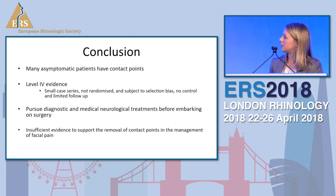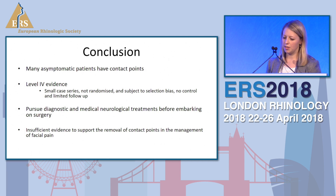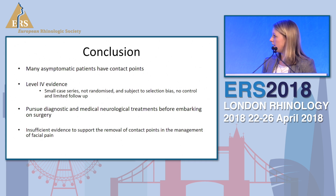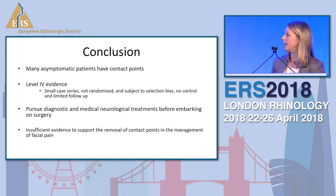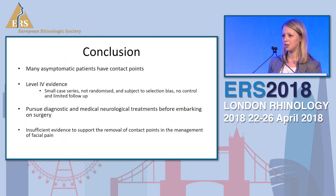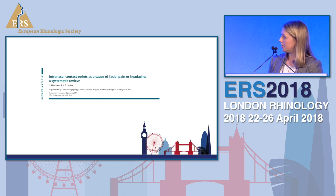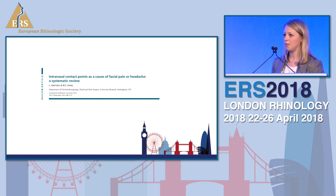In conclusion, many asymptomatic patients have contact points. There is only level four evidence — small case series that are not randomised, subject to selection bias, with no control group and limited follow-up. It's important to pursue diagnostic and medical neurological treatments before embarking on surgery. One study showed that 90% of patients diagnosed with sinus headache actually fulfilled the IHS criteria for migraine. In conclusion, there is insufficient evidence to support the removal of contact points in the management of facial pain. This work has been published in Rhinology, January 2013.